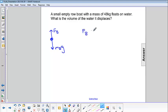So, buoyant force is equal to the mass of the boat times g. Buoyant force is equal to the density of the fluid times g times the volume displaced.